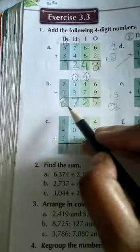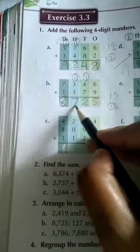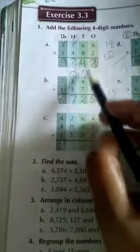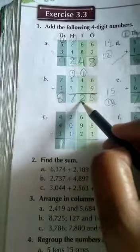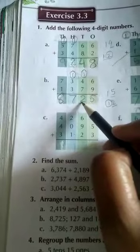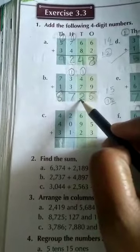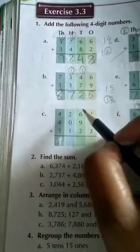Is it clear, students? The answer will be 8725. I hope you have understood. In this way you will complete all the questions in your book.